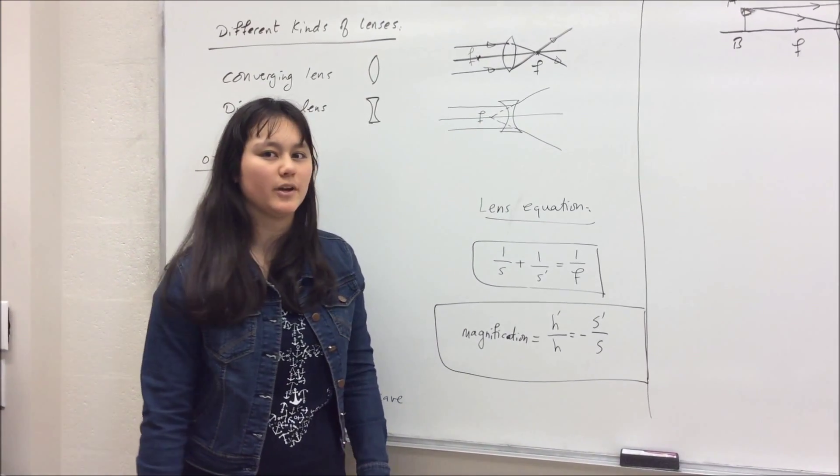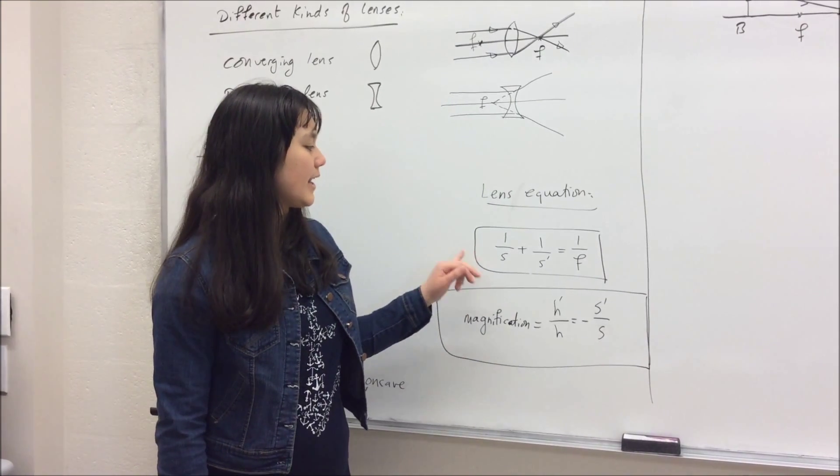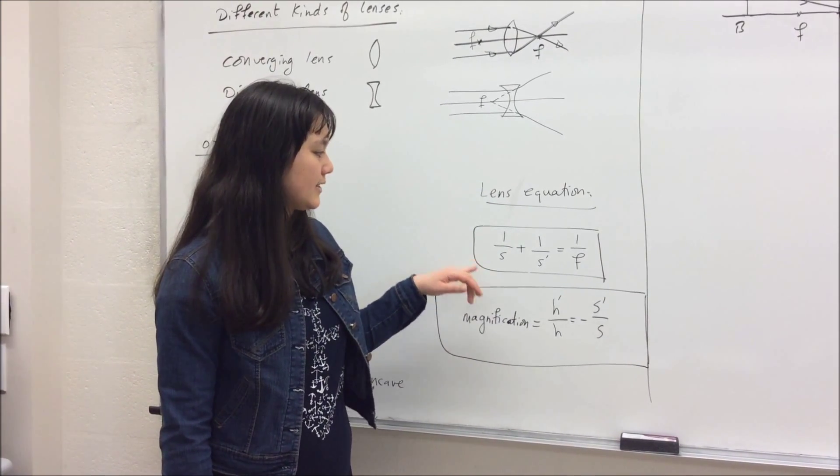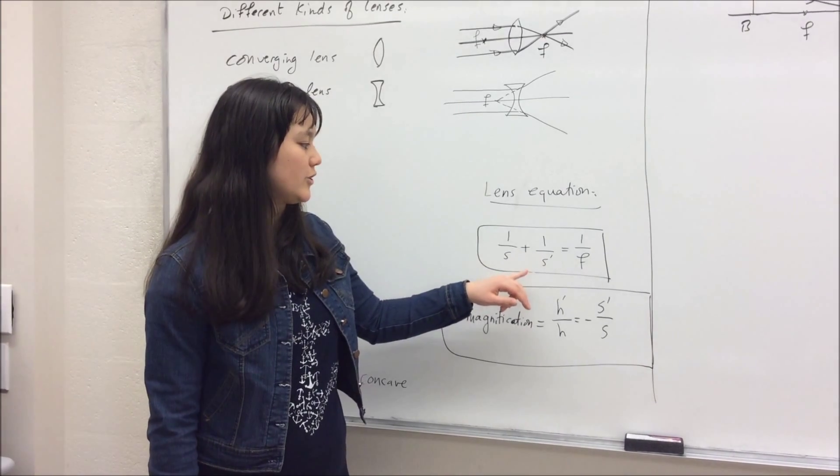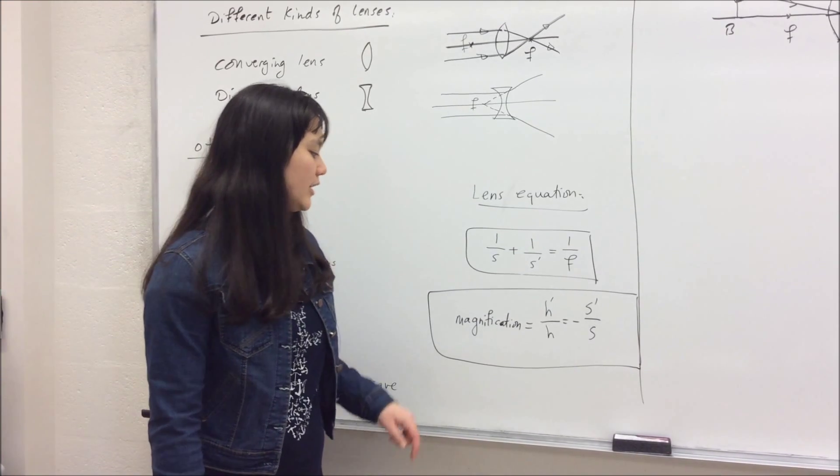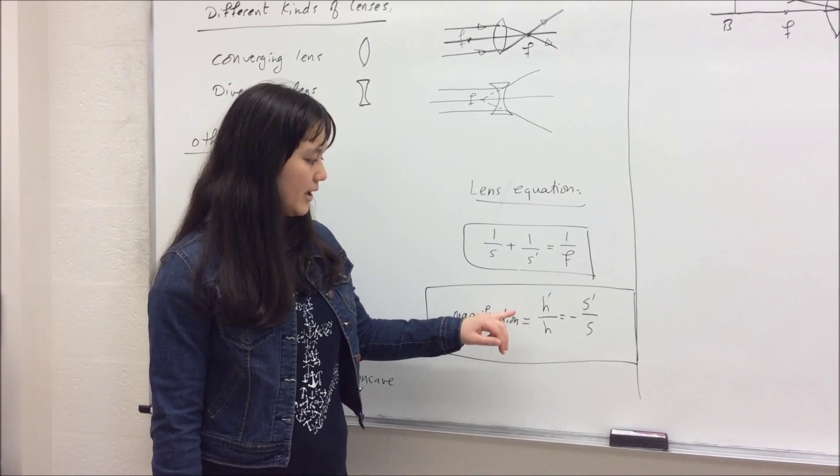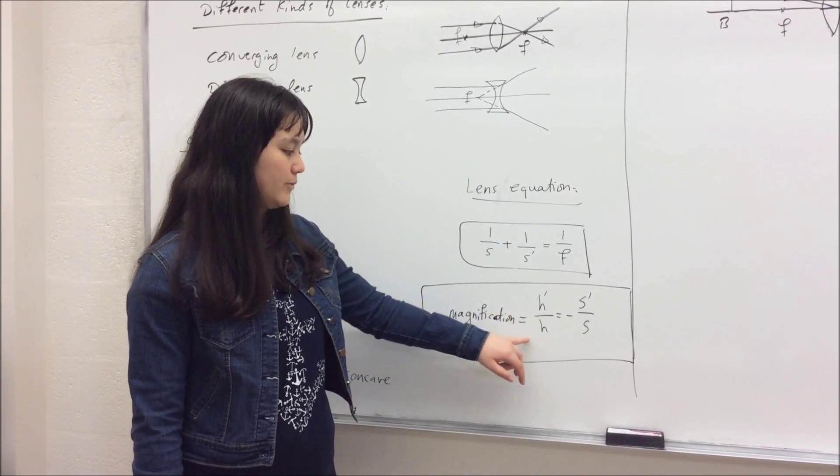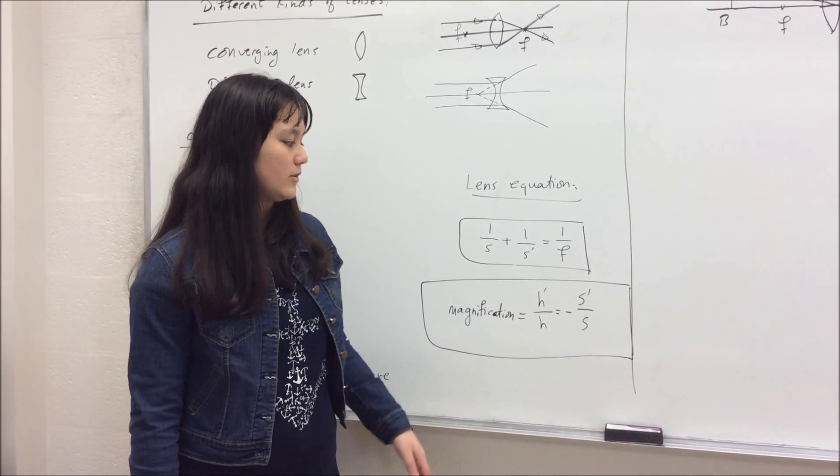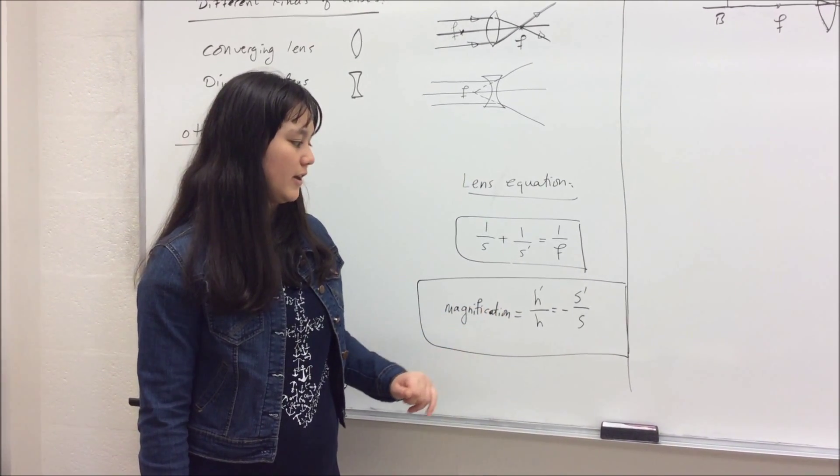So for this lab, we're going to be using two equations. The first equation is called lens equation, and it states that 1 over the object distance plus 1 over the image distance is equal to 1 over the focal length. And the second equation is the magnification is equal to the image height divided by the object's height, which is also equal to the image distance divided by the object's distance.